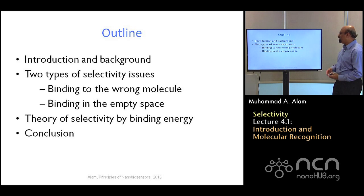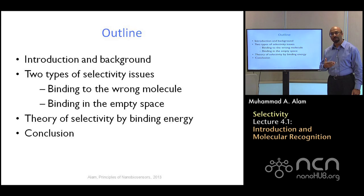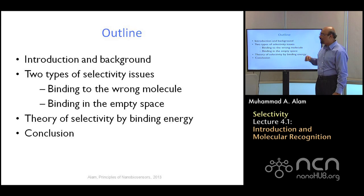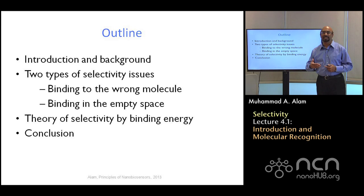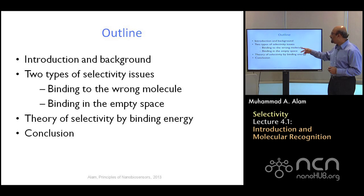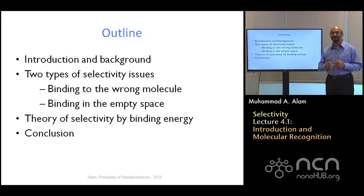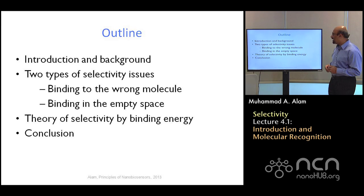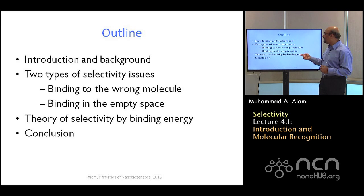I'll begin with an introduction and background regarding the issue of selectivity. Then I'll talk about two types of selectivity issues. One has to do with binding to the wrong molecule so that you incorrectly say something is present when it's not really there, versus binding in the empty space. These are not the only selectivity concerns, but they are some of the most important non-trivial ones we often forget about, especially when thinking about nanobiosensors.